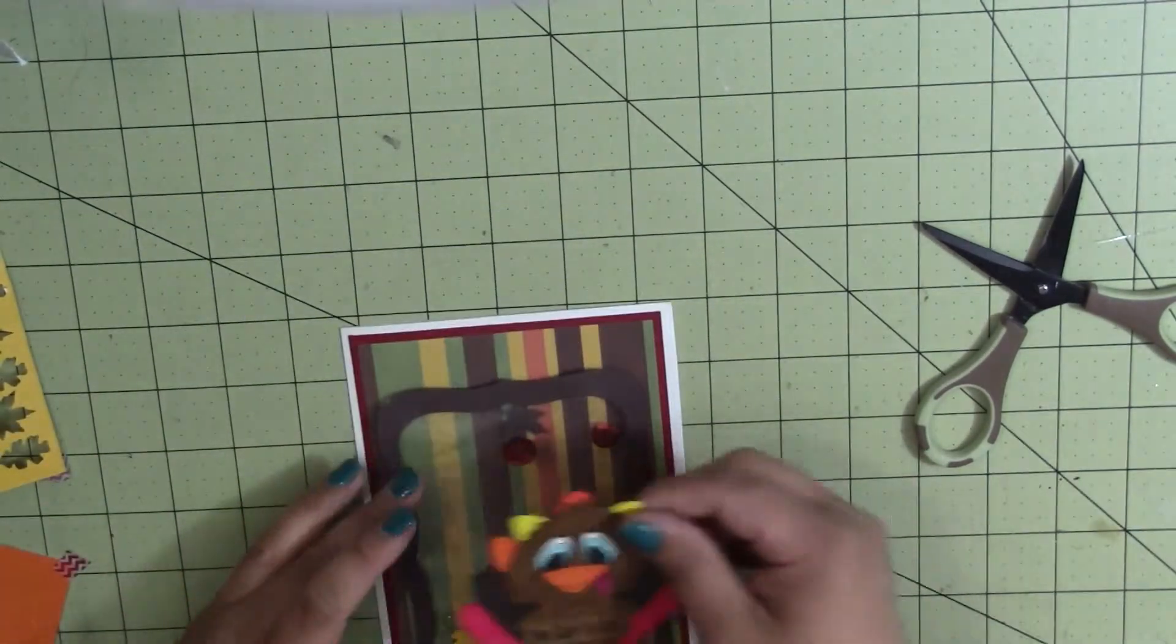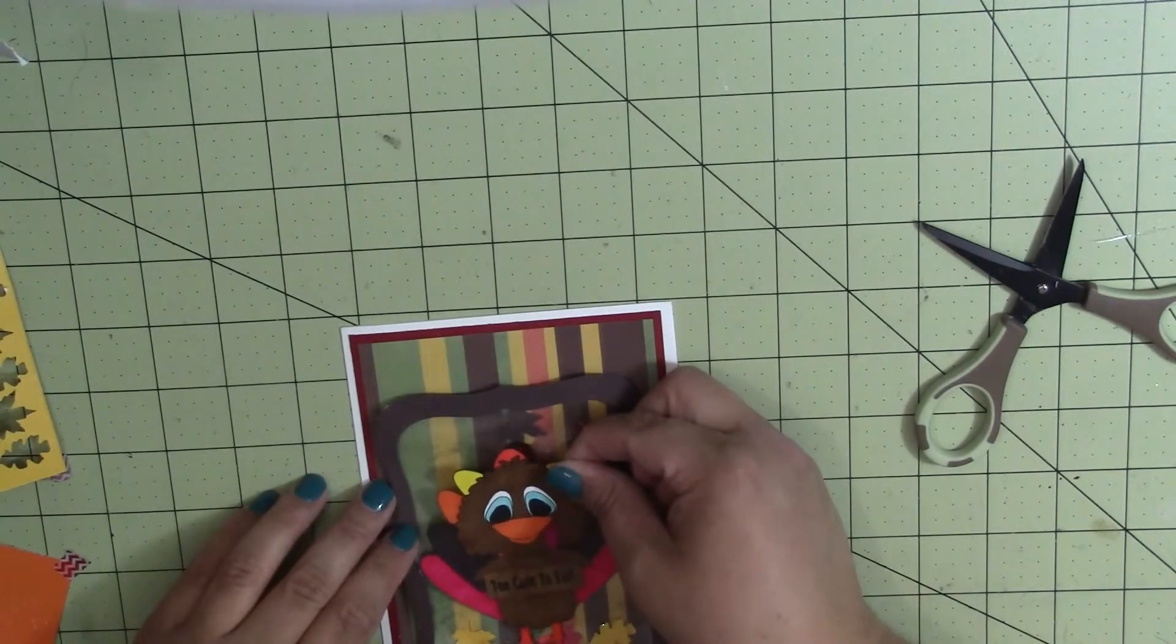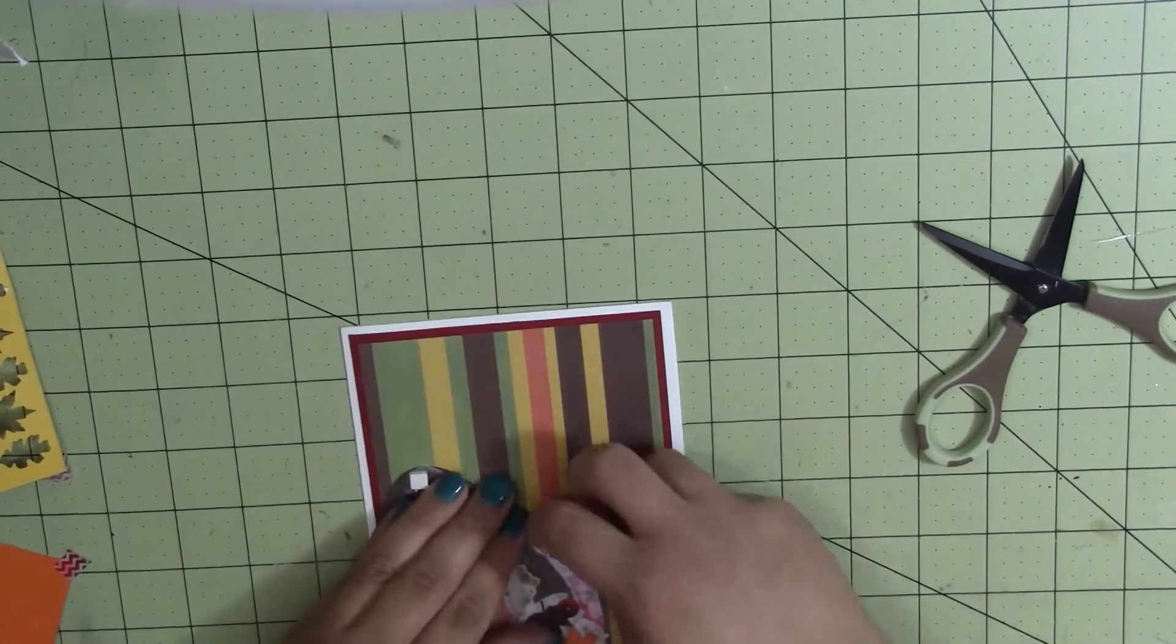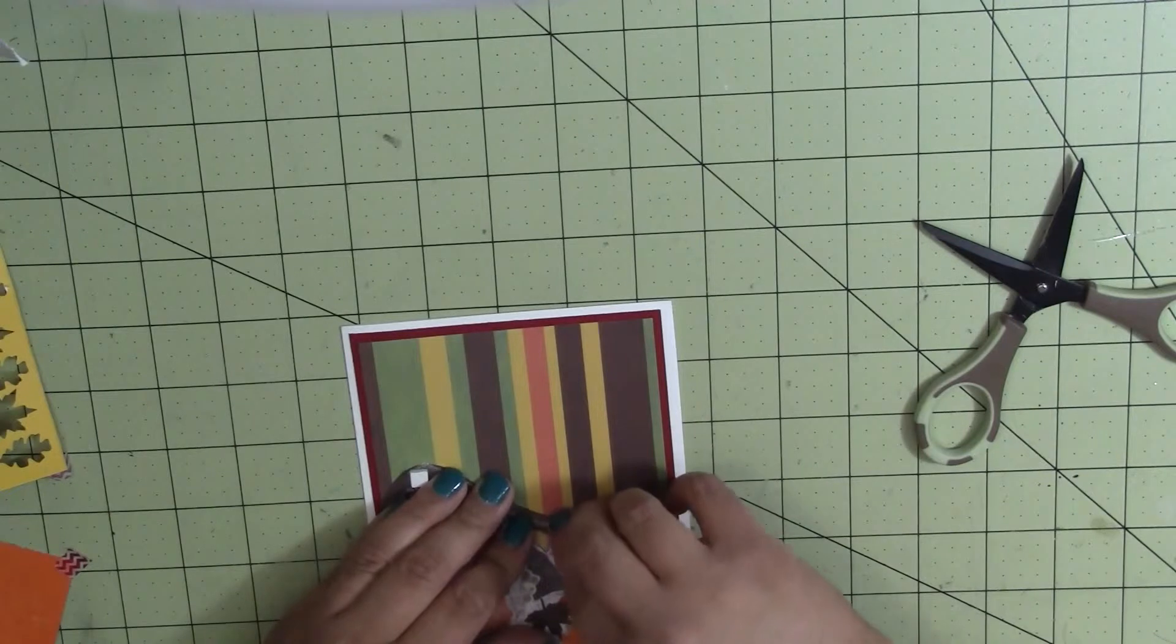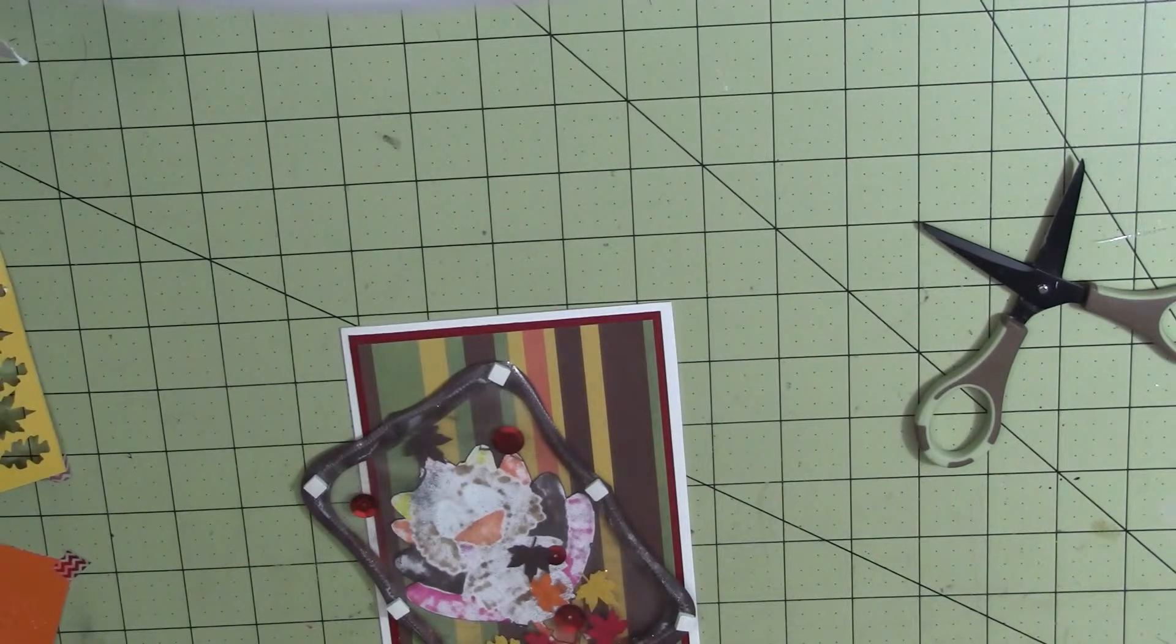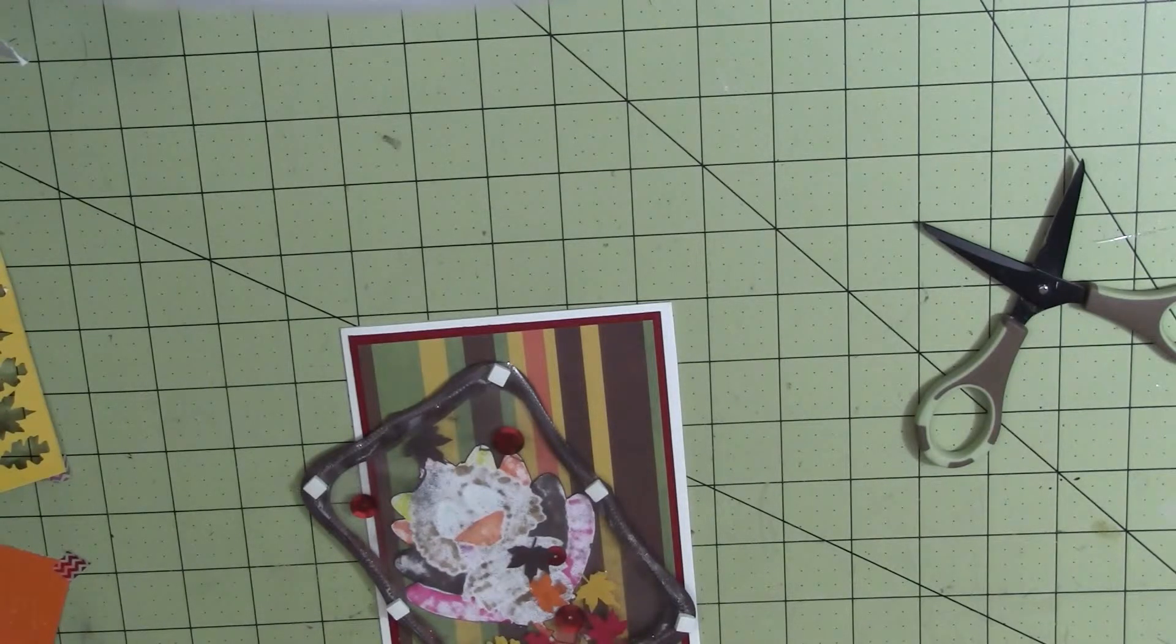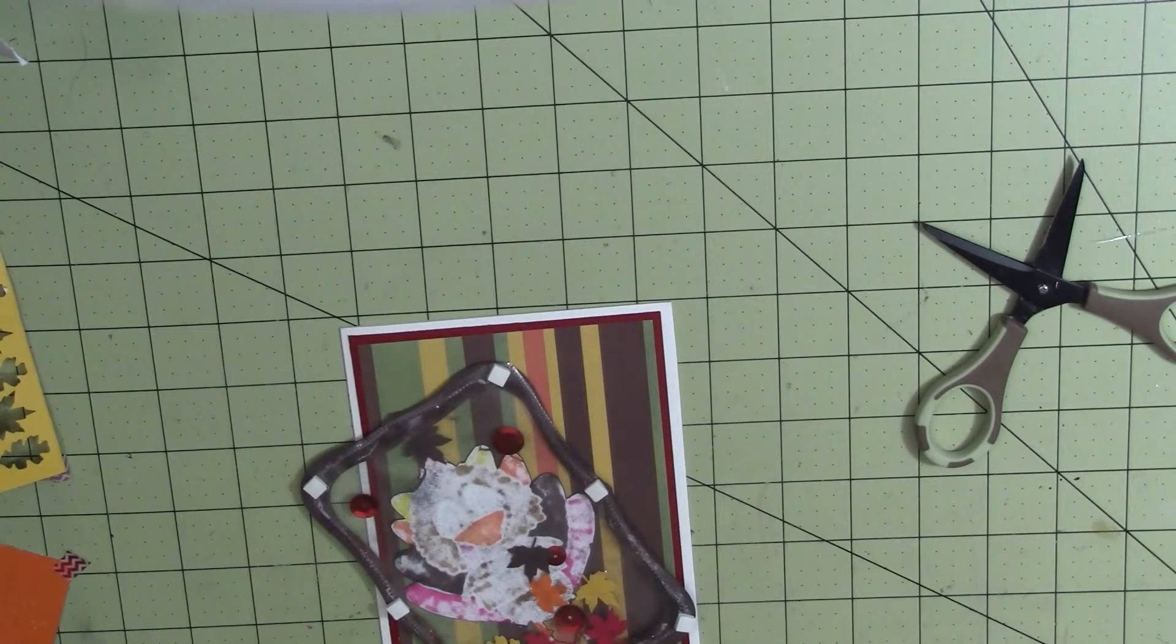And then I'm going to pop him down where I want him. And I'm going to come in with some bigger foam dots, foam squares. I got both sizes from Thermal Web. I just had them. Where did I put the big ones? Because there's the little ones and the big ones disappeared. There they are.